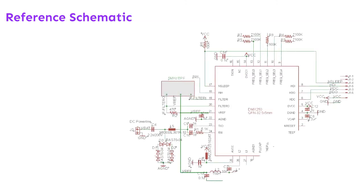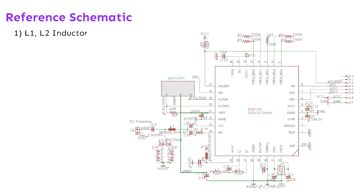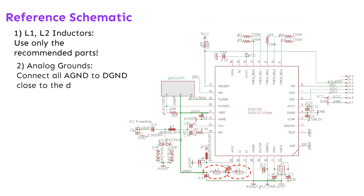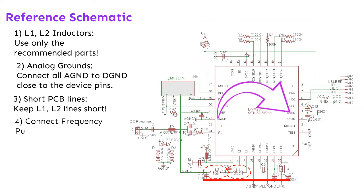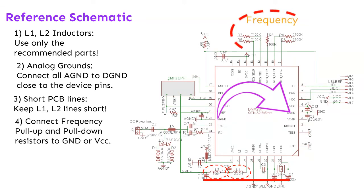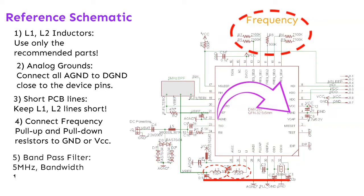Reference schematic guidelines: (1) L1 and L2 inductors — use only the recommended parts. (2) Analog grounds — connect all analog GND to digital GND close to the device pins. (3) Short PCB lines — keep L1 and L2 lines to the device short. (4) Connect frequency pull-up and pull-down resistors to GND or VCC. (5) Band pass filter: 5 MHz, bandwidth 1.4 MHz, 470 Ohm.